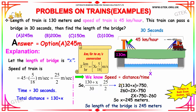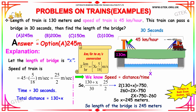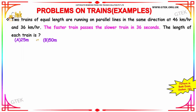Expanding: 2 times 130 is 260, plus 2x equals 750. So 2x equals 750 minus 260, giving x equal to 245 meters. The length of the bridge is 245 meters.